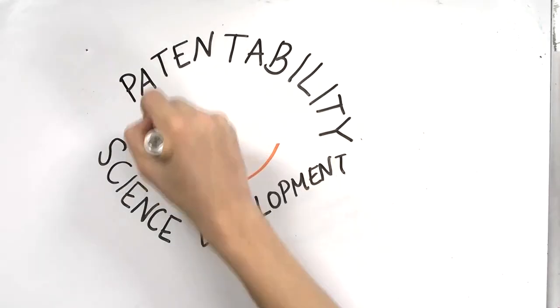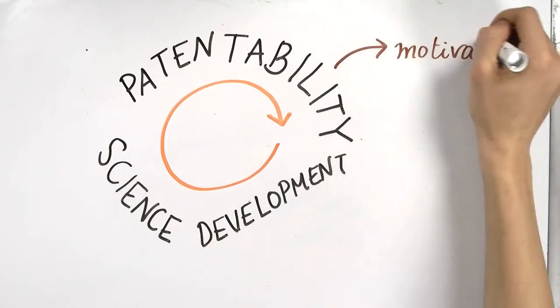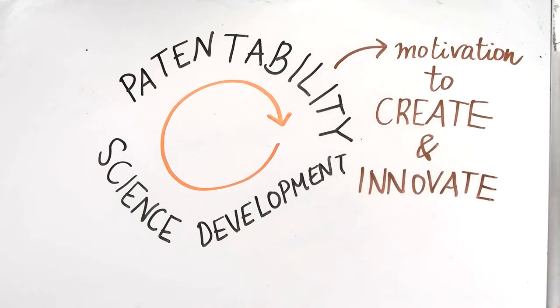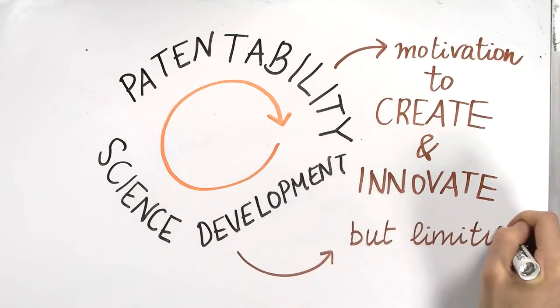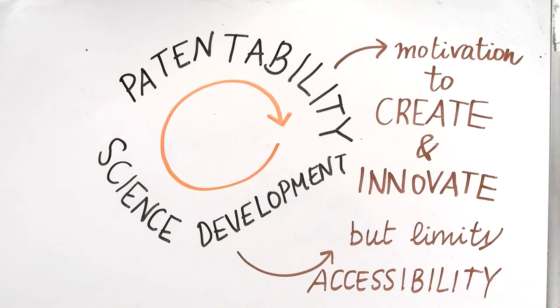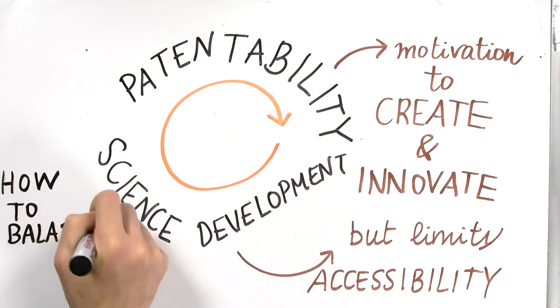At the same time, with the mission of open science, iGEM encourages students to think about the relationship between patentability and science development critically. Although patents give scientists the motivation to create, it also limits accessibility of research data and establishes a physical barrier of information.